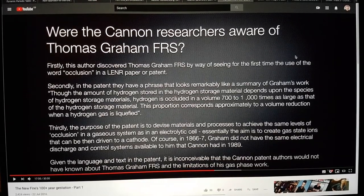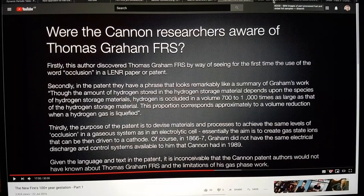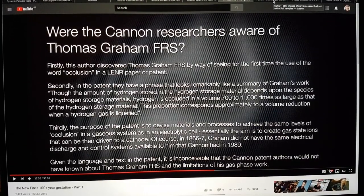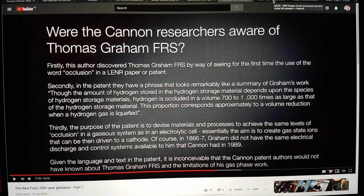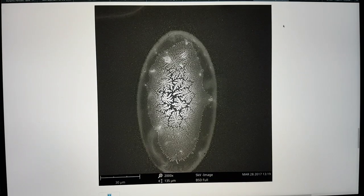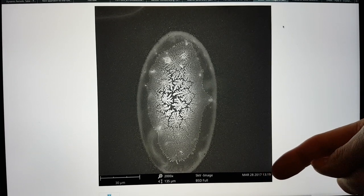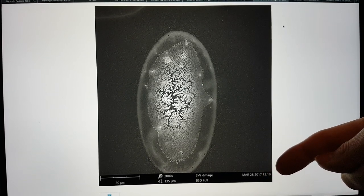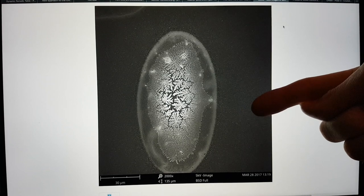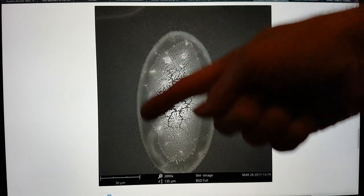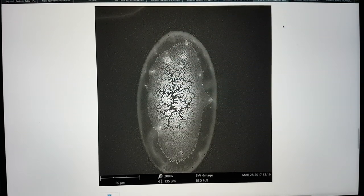And then I wanted to look at the Cannon patent that I mentioned here. And they actually referred to the word occlusion. And they say, secondly, in the patent, they have a phrase that looks remarkably like a summary of Graham's work. Though the amount of hydrogen stored in the hydrogen storage material depends upon the species of hydrogen storage materials, hydrogen is occluded in a volume 700 to 1,000 times as large as that of the hydrogen storage material. This proportion corresponds approximately to a volume reduction when hydrogen gas is liquefied.